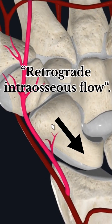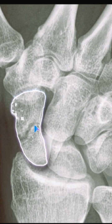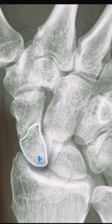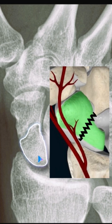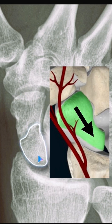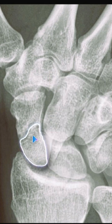This is known as retrograde intraosseous blood flow. Whenever a fracture of the scaphoid occurs through the waist line, it divides the bone into distal and proximal segments. This fracture line hampers the blood supply because the blood supply travels in the reverse direction.